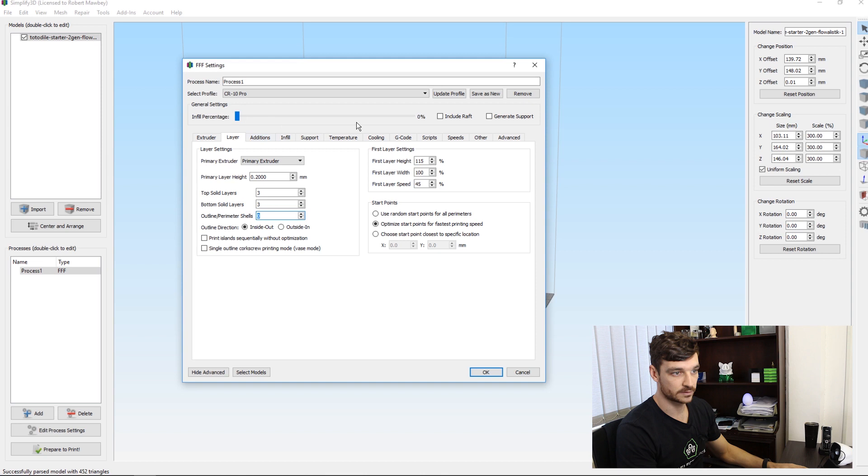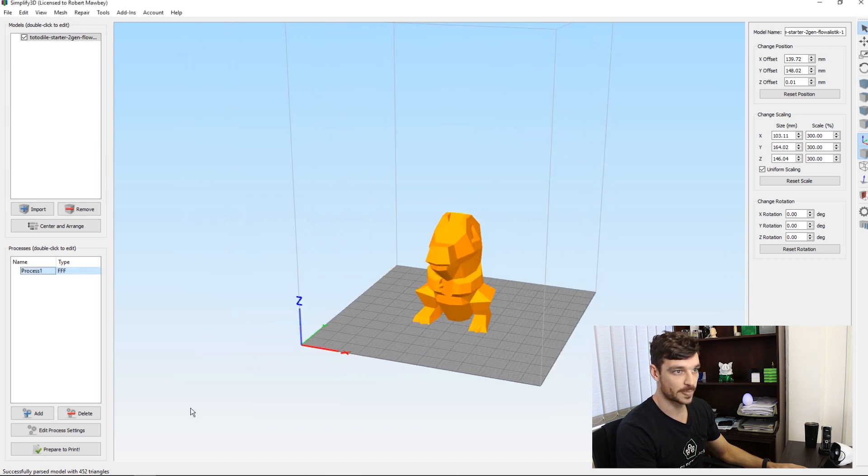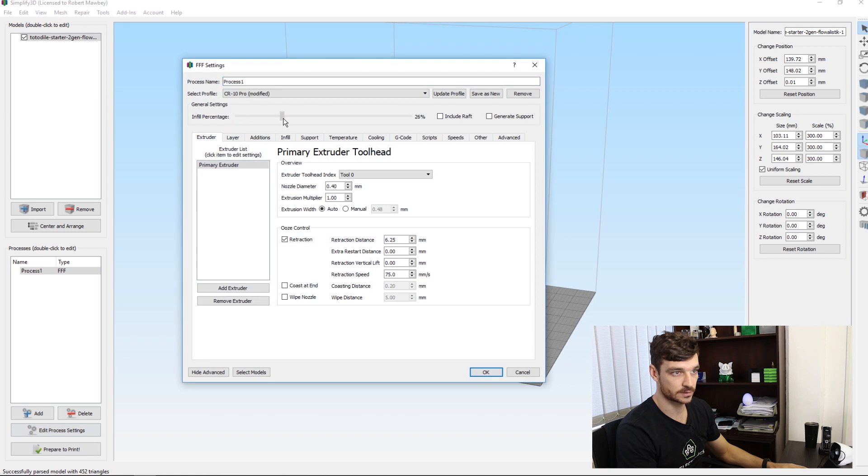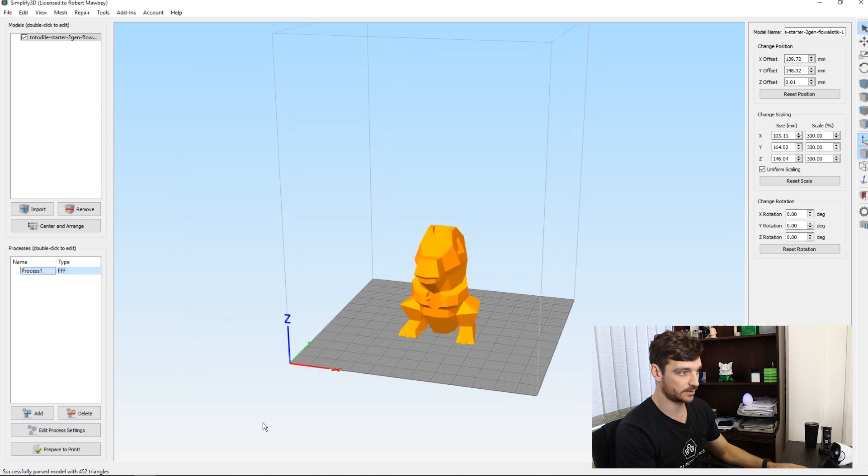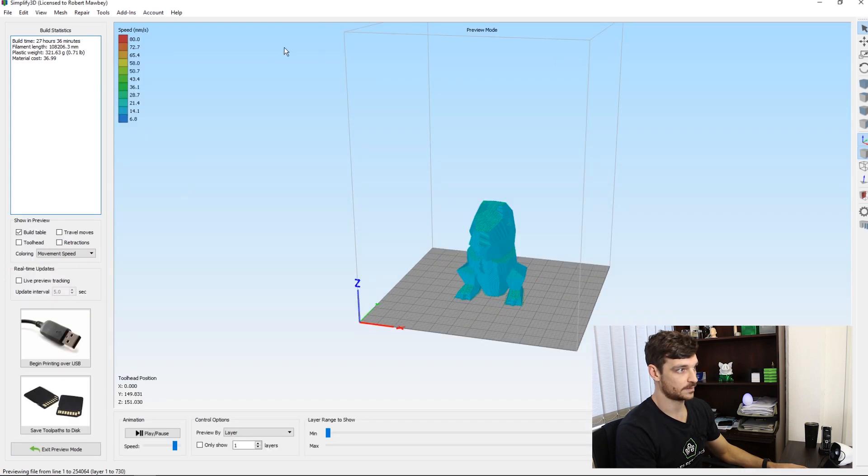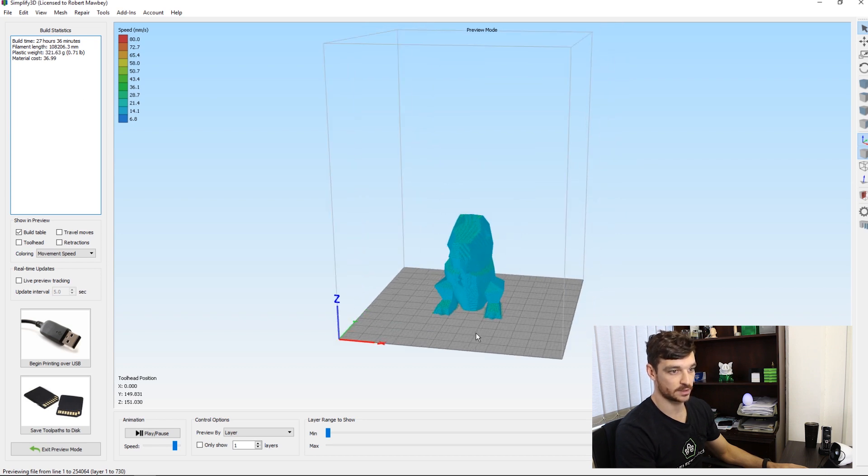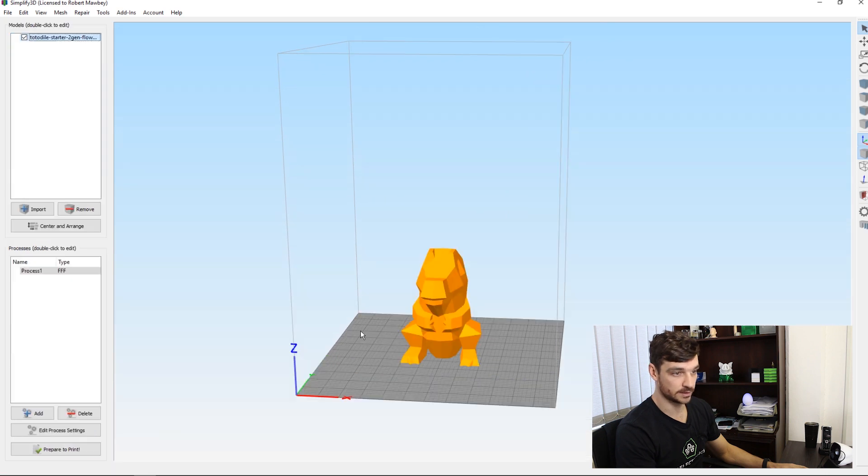For the first version, the uneconomical version, we're going for 40% infill for strength. We're going to use one outline perimeter shell and three top solid layers should be fine. Let's see how much filament Simplify3D thinks we're going to use. 321.63 grams. That's like one third of a roll. Definitely not ideal.